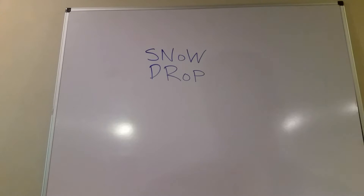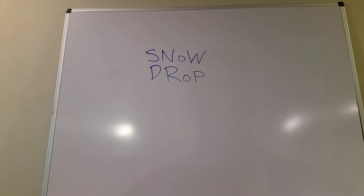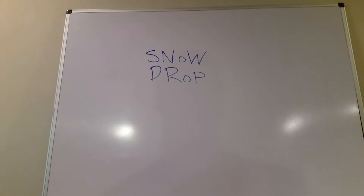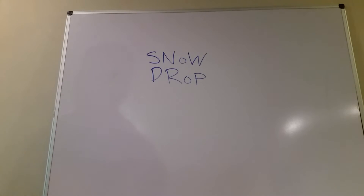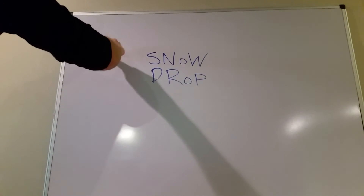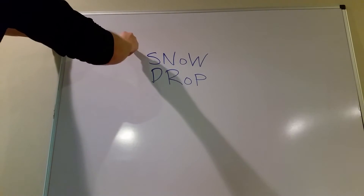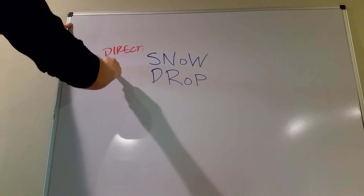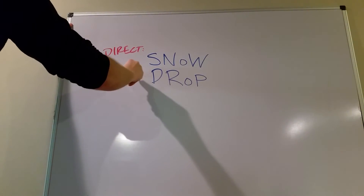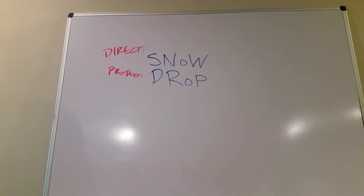So when you hear someone say western blot, southern blot, northern blot, it's kind of hard to just rote memorize what each one of those stands for. So here's a quick mnemonic: snow drop. Write it this way where the two lowercase o's are stacked on top of each other. From there it gets pretty easy, because this top line is going to be your directions, and the bottom line is going to be the product that they're looking for.